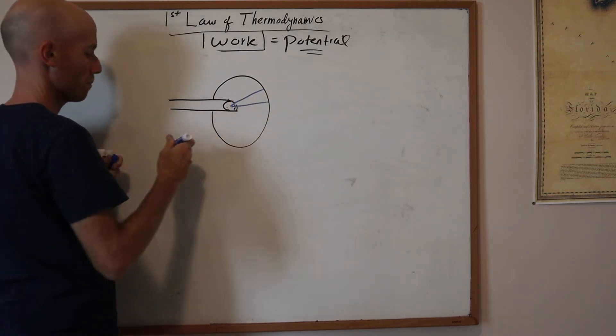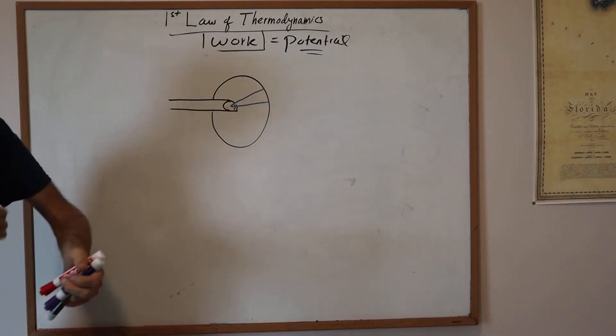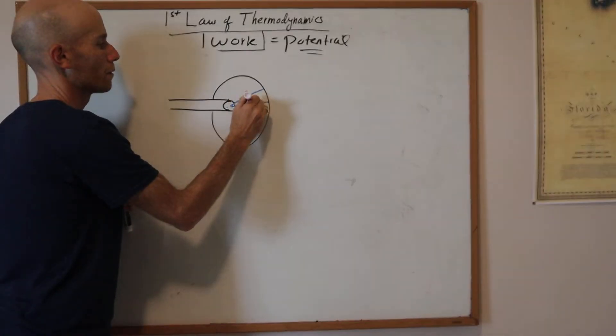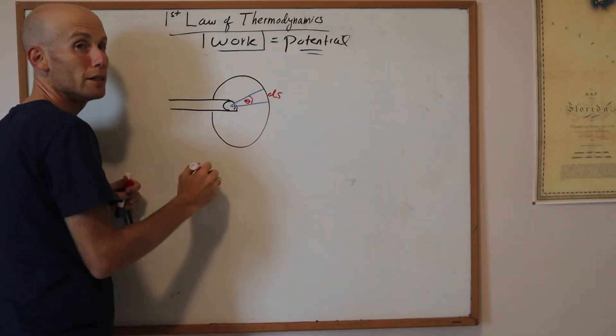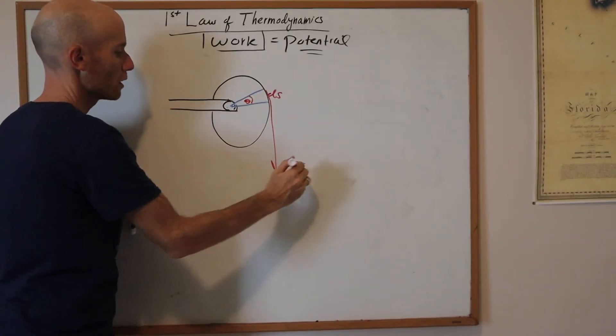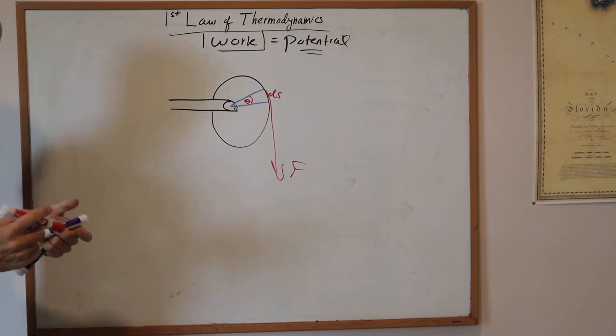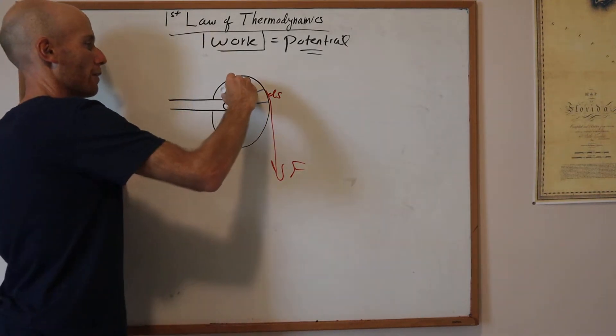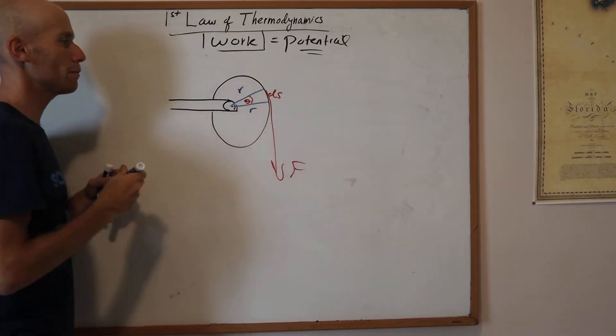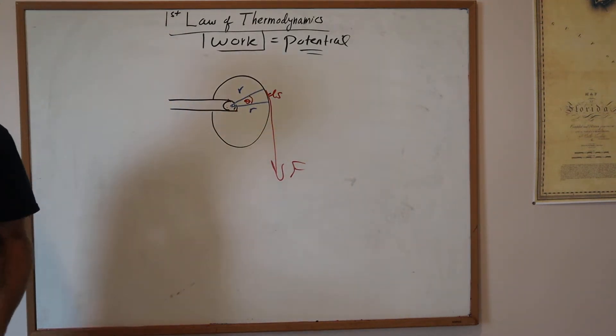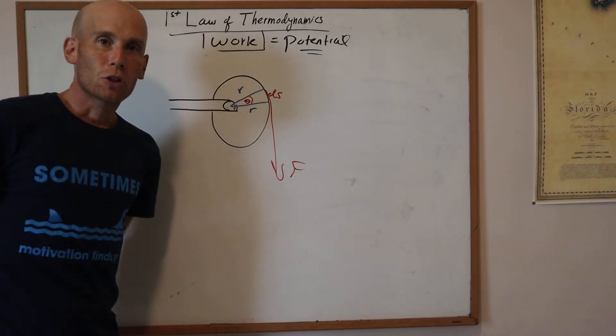I have an angle theta right here, and this thing here is ds. As this is happening, I have a force that goes down, and each one of these blue lines is the radius of that outer circle.